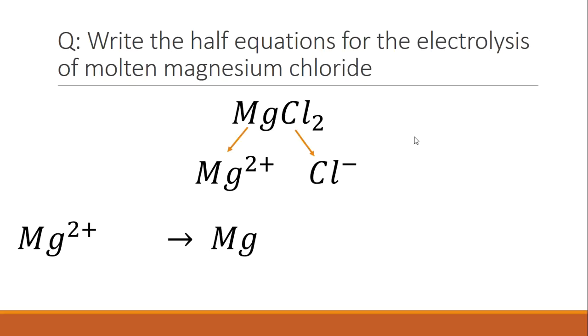When we think about the basic structure of the ionic equations that are going to happen at the electrodes, the Mg2+ is going to turn back into magnesium. And the Cl− is going to turn back into chlorine. So we've got the ions going to atoms, which is what happens at the electrodes.